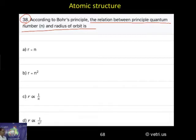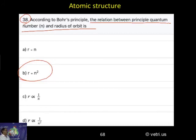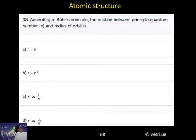The correct answer is b — r is proportional to n square. That is, the radius is directly proportional to the square of the principal quantum number.